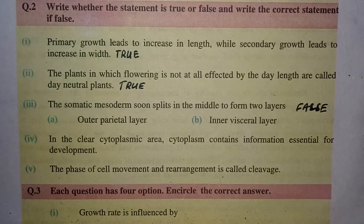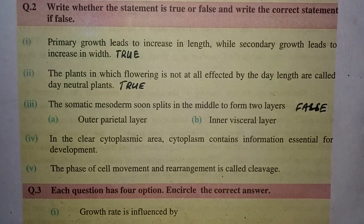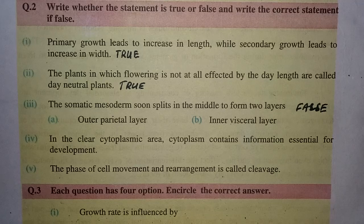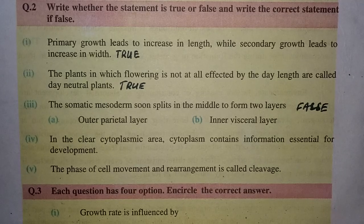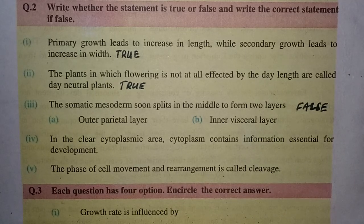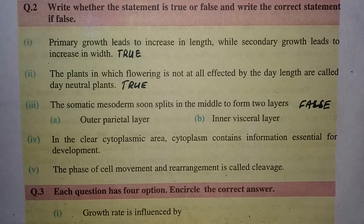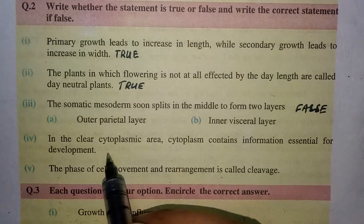The fourth statement is: in the clear cytoplasmic area, cytoplasm contains information essential for development. This is a true statement.